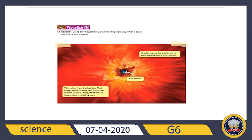White dwarfs shine for billions of years before they cool completely. As white dwarfs cool, they become fainter. This is the final stage in the life cycle of low mass stars. Now, here is a question: using the image below, describe the process by which a giant becomes a white dwarf.